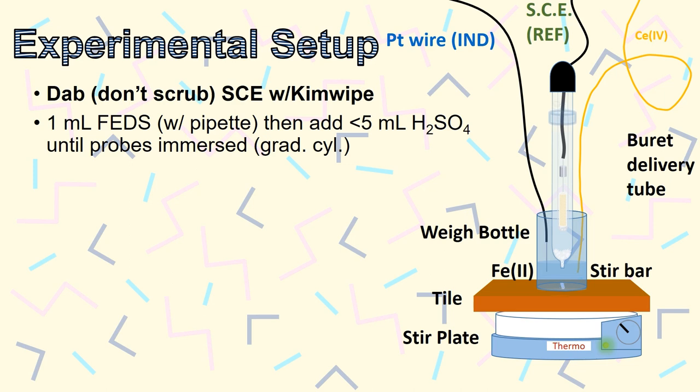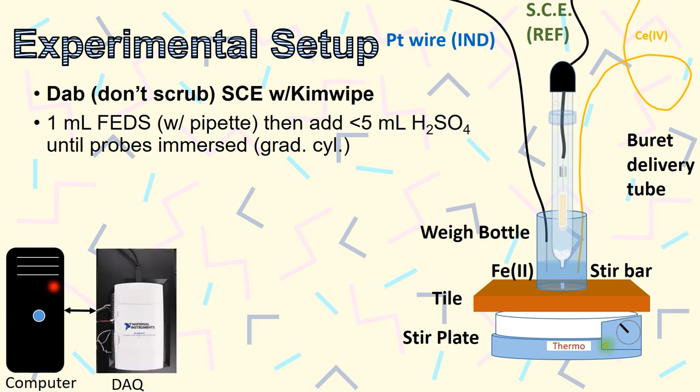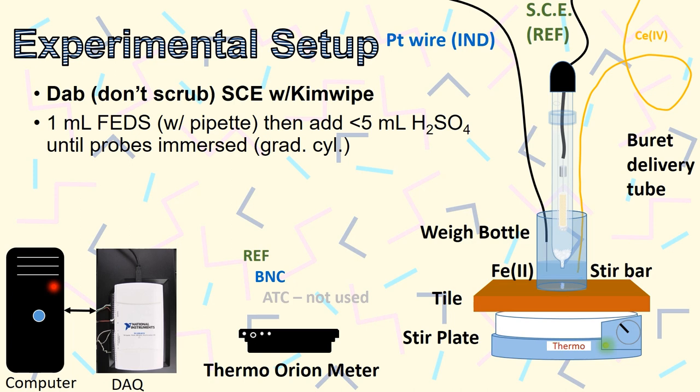The signals will be collected using the computer and potentiometer as discussed earlier. There are several possible connections on the back of the device. There's a place for the reference electrode, a BNC cable where the platinum wire will connect, an automatic temperature correction, which we don't need, and then there's the record port.